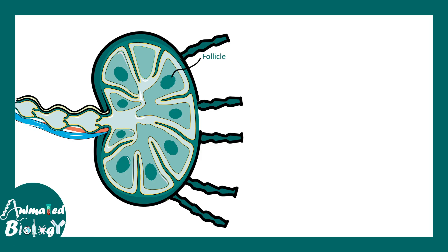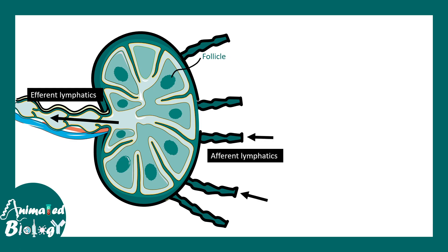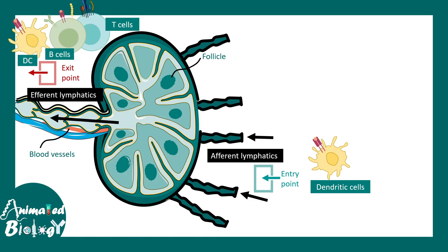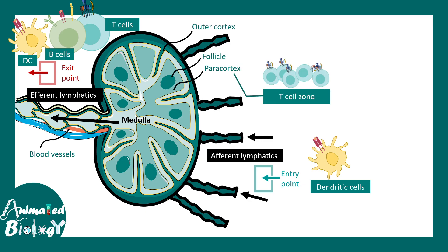To understand what goes wrong in these lymphomas we first need to understand how B cell development takes place in the lymph nodes. B cells are born in the bone marrow but they reside eventually in the lymph node. A lymph node has afferent and efferent lymphatics — the entry and exit points. Dendritic cells and antigen-presenting cells enter the lymph node, and T cells, B cells, and dendritic cells interact inside. The paracortex is T cell-heavy; the follicle is B cell-heavy.